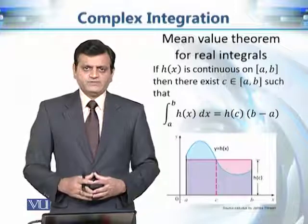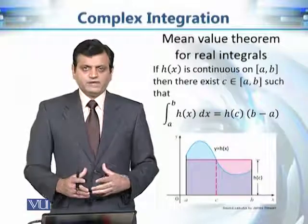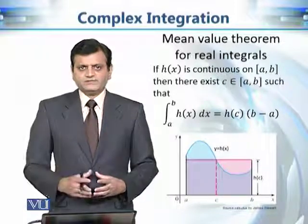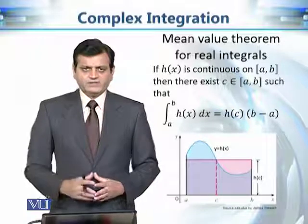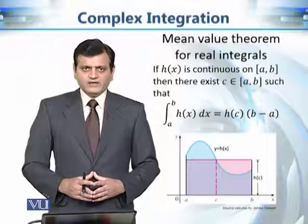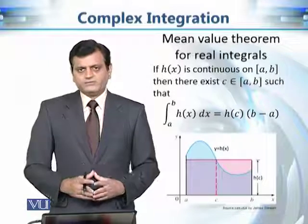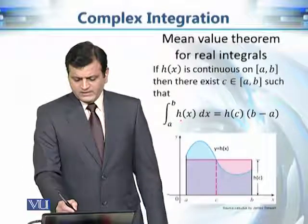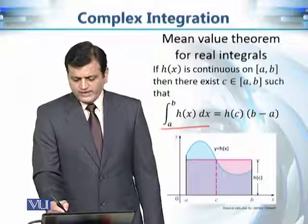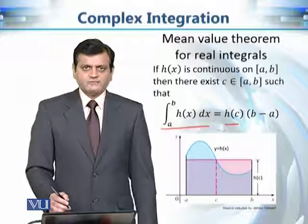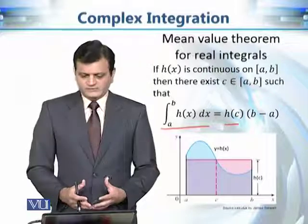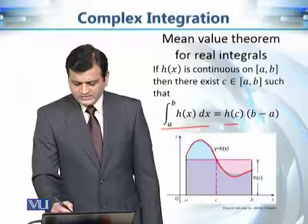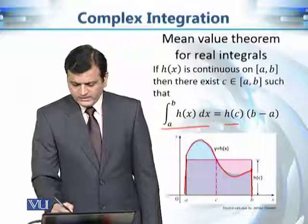The first property that is different is the mean value theorem. The mean value theorem holds for real integrals but does not hold for integrals of complex-valued functions of one variable over real intervals. The mean value theorem says: if h is continuous on a closed interval a to b, then there exists a value c such that the integral equals h(c) · (b − a).